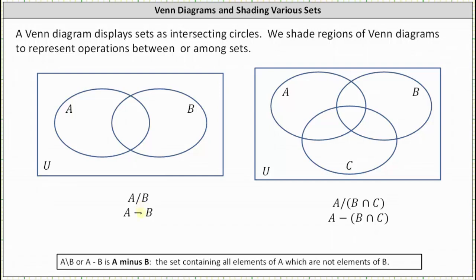A minus B is the set containing all the elements of A which are not elements of B. So the elements that are in A which are not elements of B would be this set here. Again, this set contains the elements that are in A which are not in B. This is A minus B.